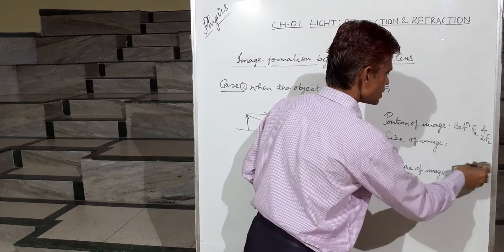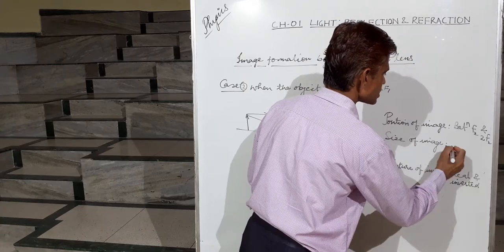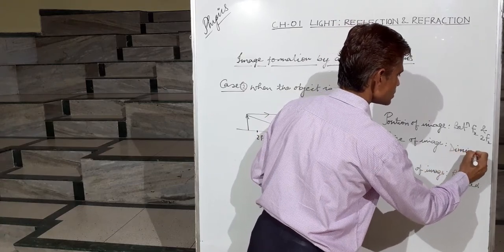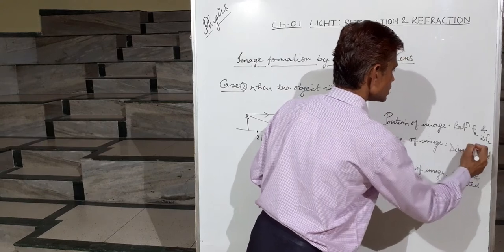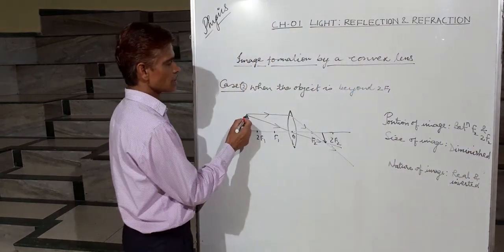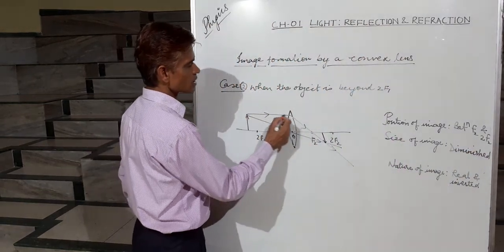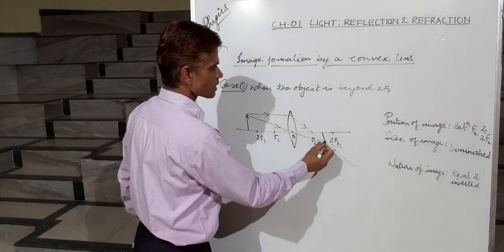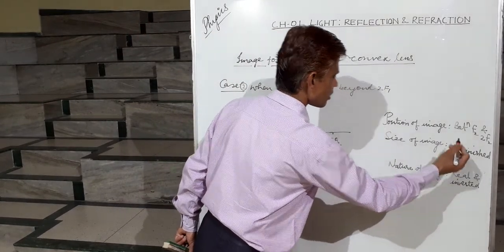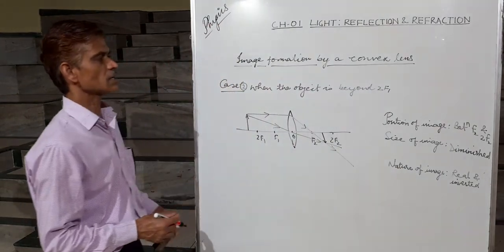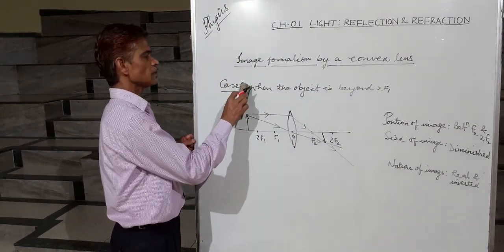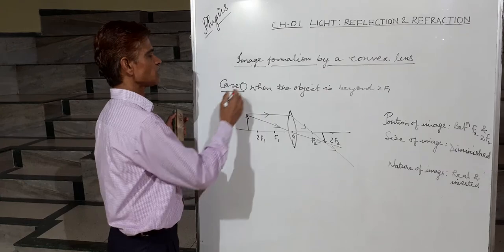The size of the image is smaller than the object, so the image is diminished. Real rays meet after refraction, so a real and inverted image is formed. This was case number 2.